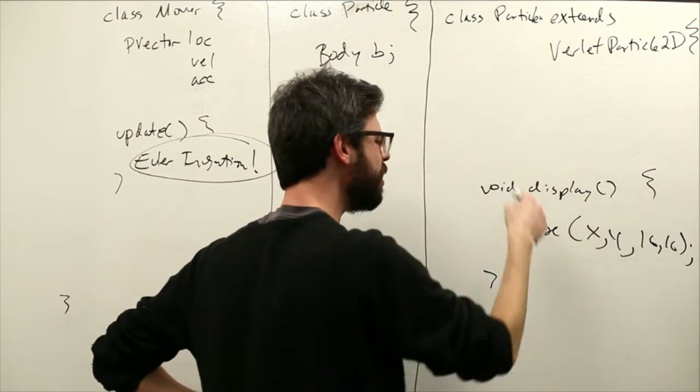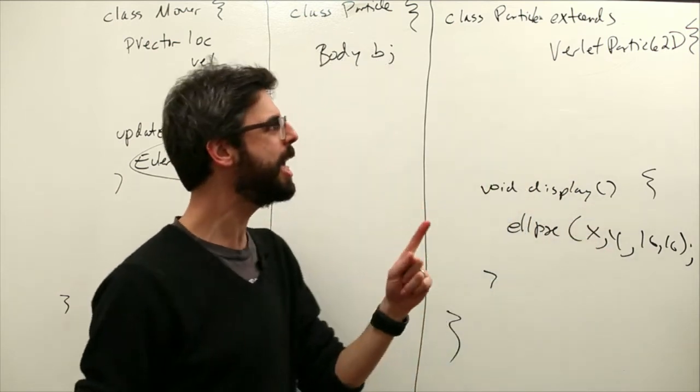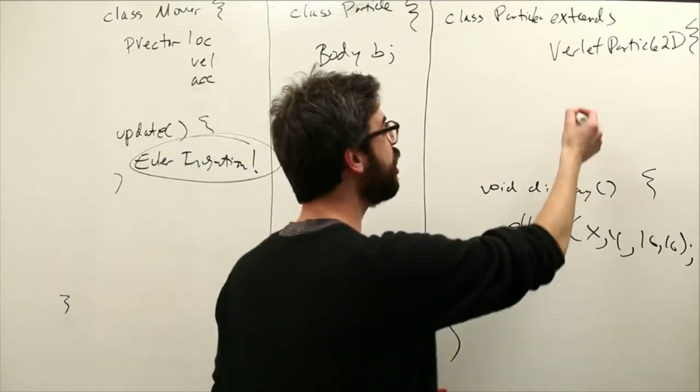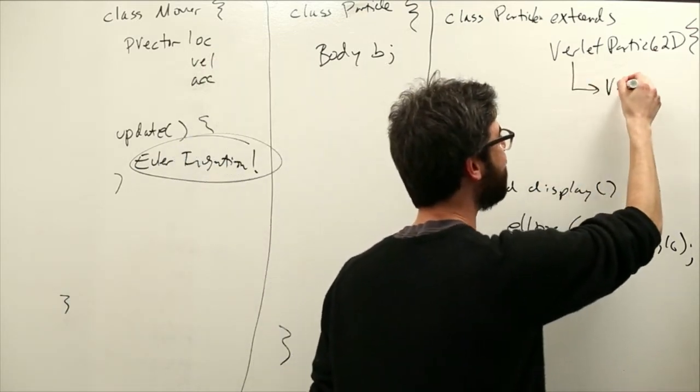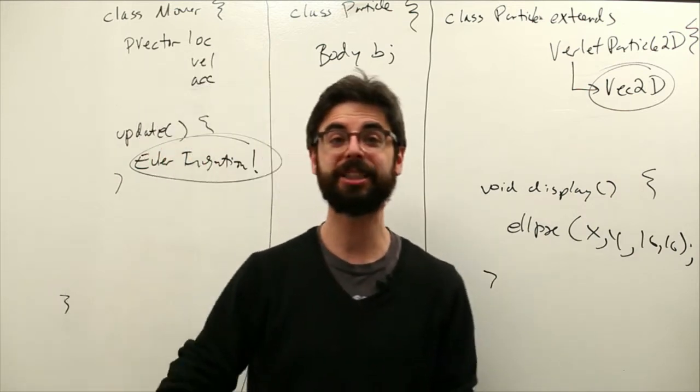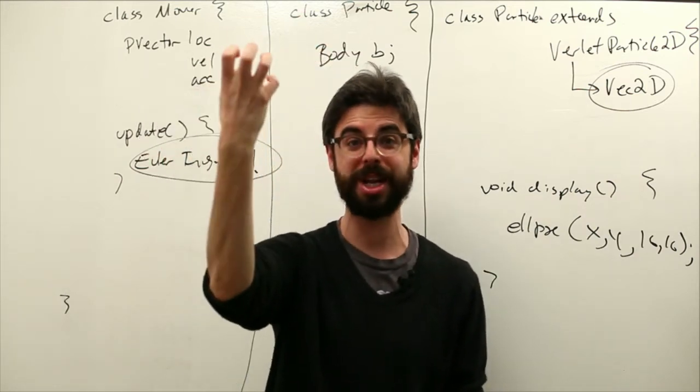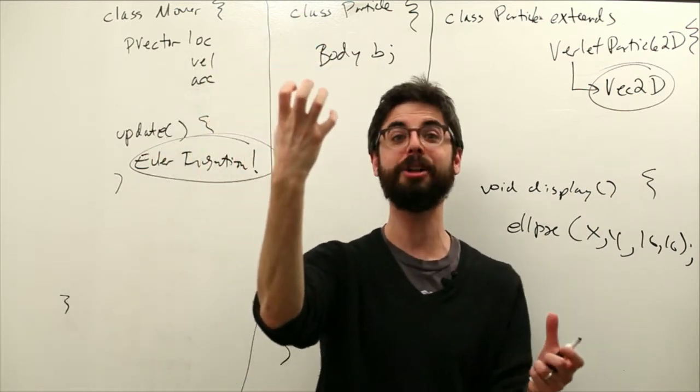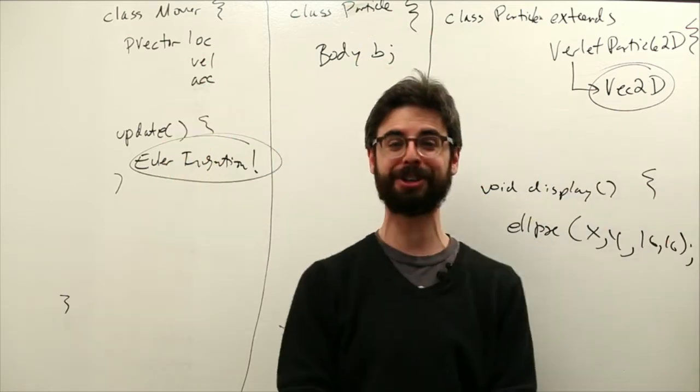So verlet particle, we must have inherited just an x and a y. How do we do that? It turns out that verlet particle itself extends vec2d, right? A vector can be a location on the screen.